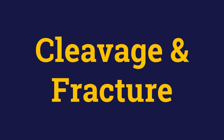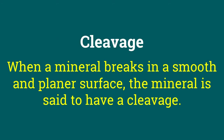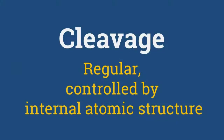Whenever a mineral breaks, it does so as cleavage or as fracture. Minerals may break along flat, curved, or crooked surfaces. When a mineral breaks along a smooth planar surface, the mineral is said to have cleavage. And when a mineral breaks along a cleavage plane, the breaking is regular and controlled by internal atomic structure.